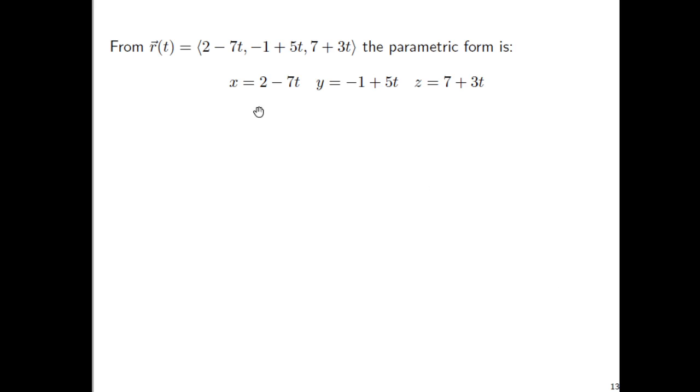Okay, so to get the other formats from this vector version, if we just take each of the three components and make them the X, Y, and the Z formulas, that's the parametric form. That's great. Like, you don't have to really do much work at all. And now to get a specific point, I just picked a random value for T. I just happened to pick T equals 2, and I get X is negative 12, and Y is 9, and Z is 13. So therefore, negative 12, 9, 13 is yet another point on the line.